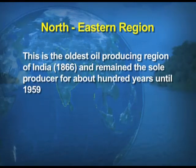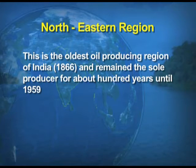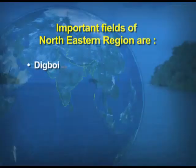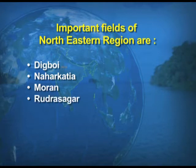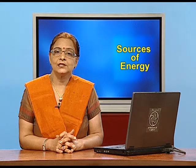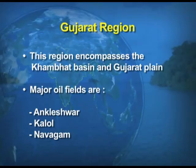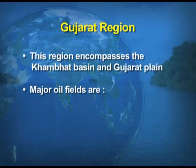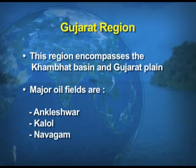The northeastern region is the oldest region of petroleum production and remained the sole producer of petroleum until 1959. The important areas within this region are Digboi, Naharkatia, Moran, and Rudrasagar. The second region is the Gujarat region, where the Khambhat basin and Gujarat plain have been the areas of petroleum production. Major oil fields under this region include Ankleshwar, Kalol, Nawagam, and Mehsana.